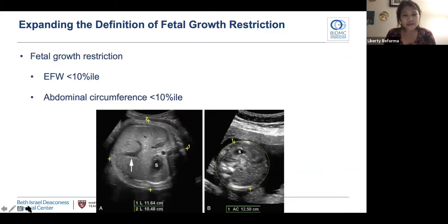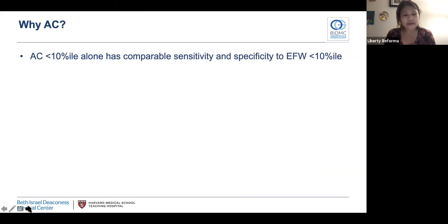One of the main changes in the 2020 guideline was the expansion of the definition of FGR. Historically it included only patients with a composite EFW less than the 10th percentile, but now it also includes patients with an isolated finding of abdominal circumference less than the 10th percentile. The image shown is an axial image of the fetal abdomen at the level of the stomach and intrahepatic portion of the umbilical vein, with only one rib cross-section showing. As a general rule, if you see the kidneys, you're too low. So why has the definition expanded?